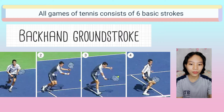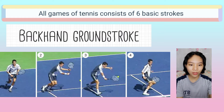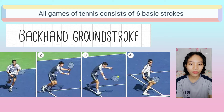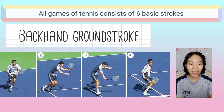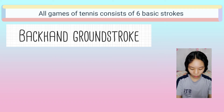Backhand Ground Stroke. It can be a one-handed or two-handed stroke. Like the forehand, the basic swing pattern starts on the side of your body, moves forward and across, and ends on the other side of your body. But unlike the forehand, the backhand is hit with the back of your dominant hand facing the direction of your stroke.